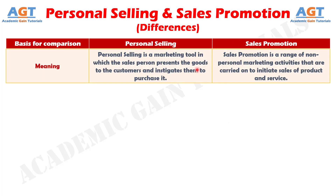Difference number one: personal selling is an element of promotional mix where a salesman visits the customer and displays the goods to initiate the purchase. Whereas, sales promotion is a tool used to stimulate sales by employing an incentive element to attract customers.